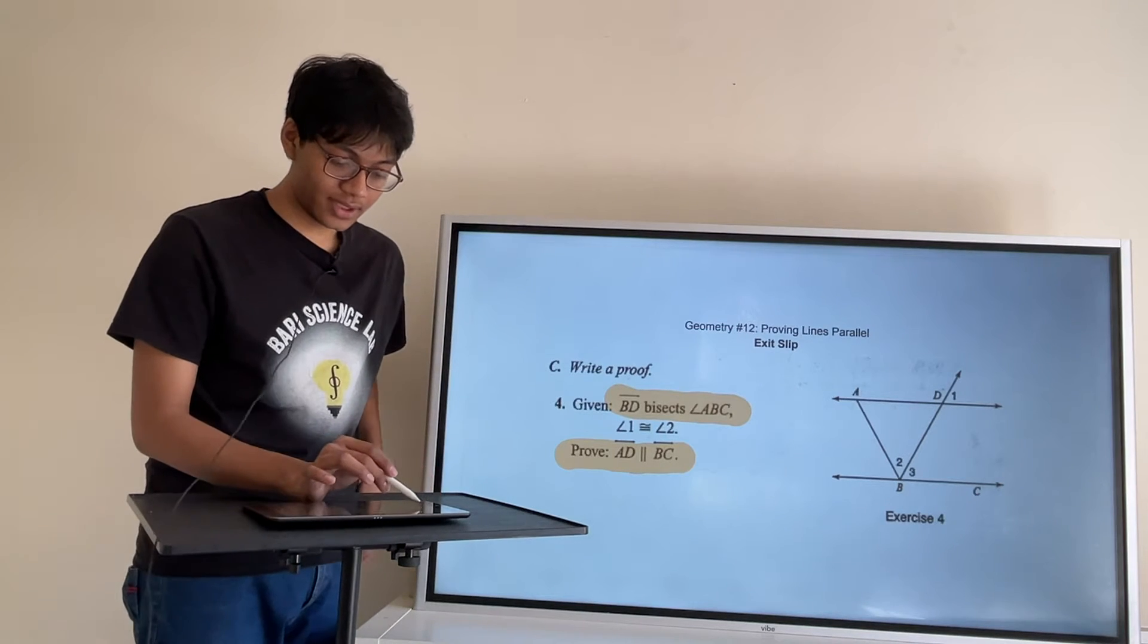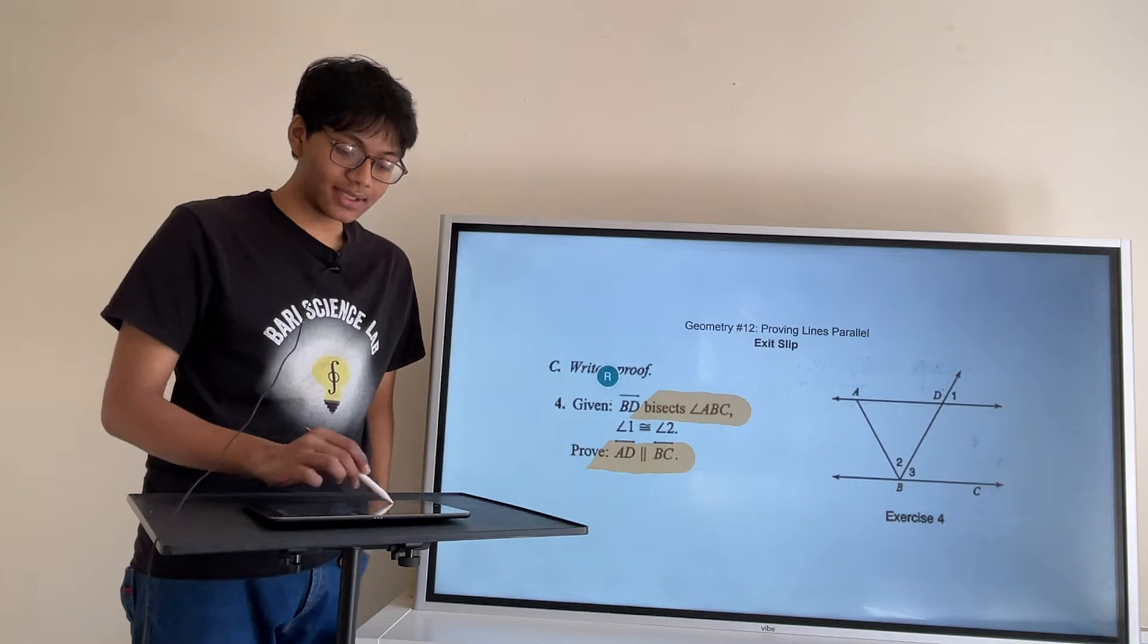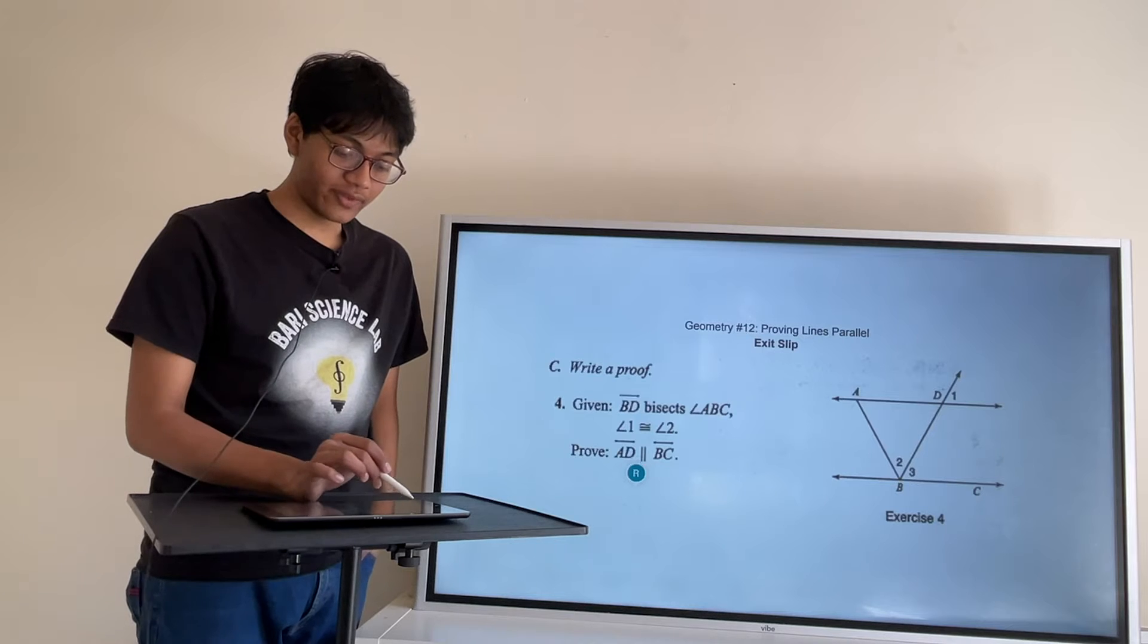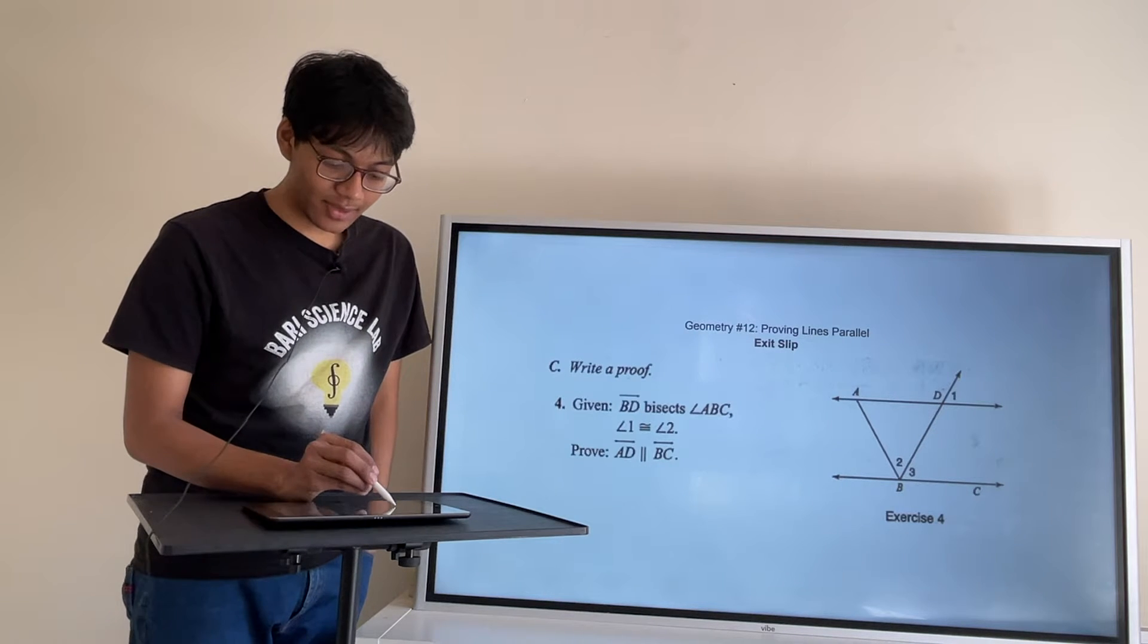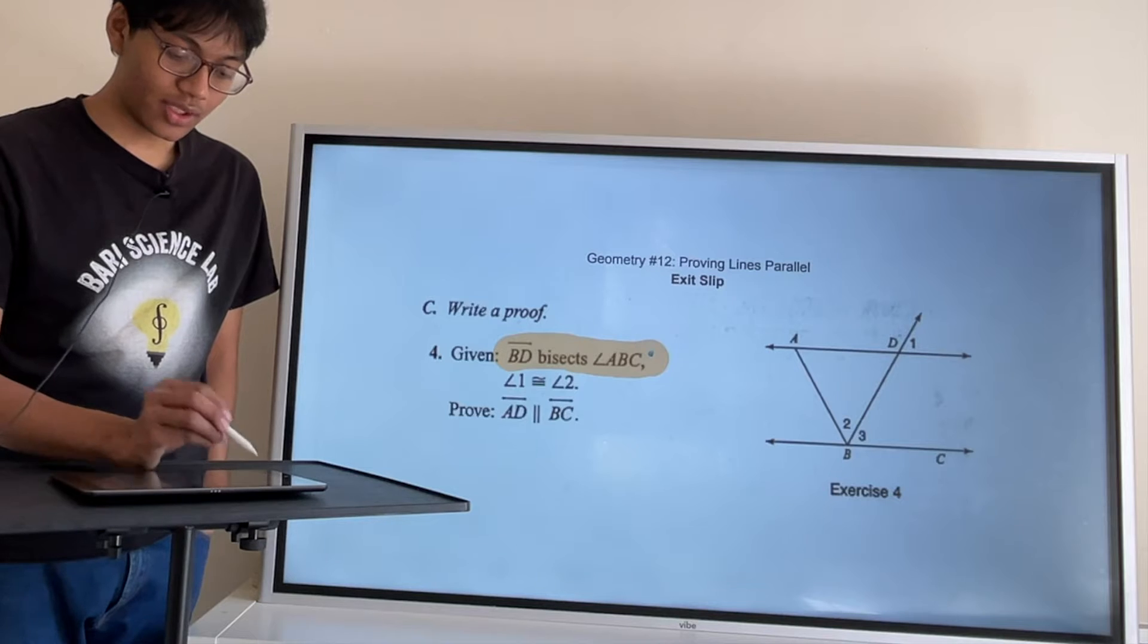All right folks, so let me give you a hint for today's exit slip. The exit slip gives you a couple of pieces of information. Number one, it tells you that BD bisects angle ABC. So let's draw that out.